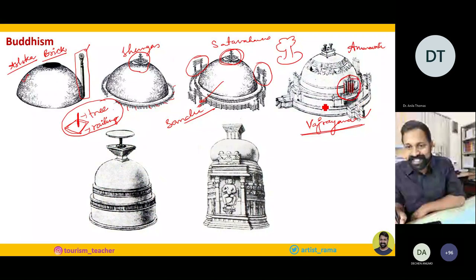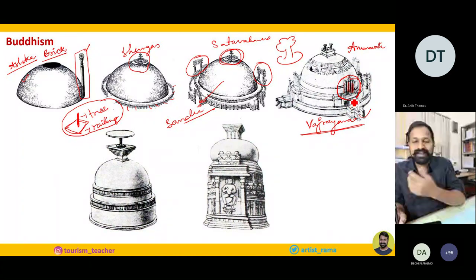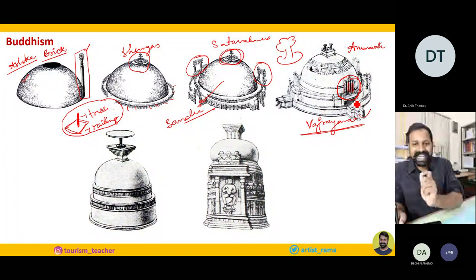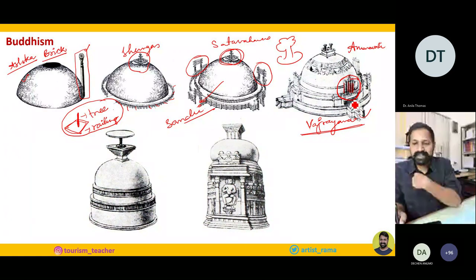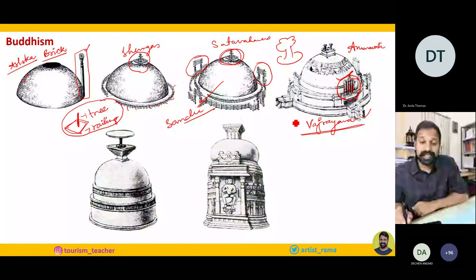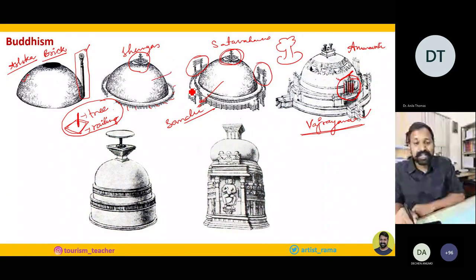Some four or five pillars are standing here — this is where offerings were kept, like the Balipitam in South Indian temples. Bali in Sanskrit means sacrifice — not cutting animals, but offering what you have. The Amaravati Stupa is the Vajrayana form, the Sanchi Stupa was originally Hinayana with no anthropomorphic forms of Buddha, but now it is Mahayana. The same stupa has become miniature — like today we give miniature Eiffel Towers or Taj Mahals as souvenirs. These smaller structures are called Votive Stupas or Mannat Stupas.